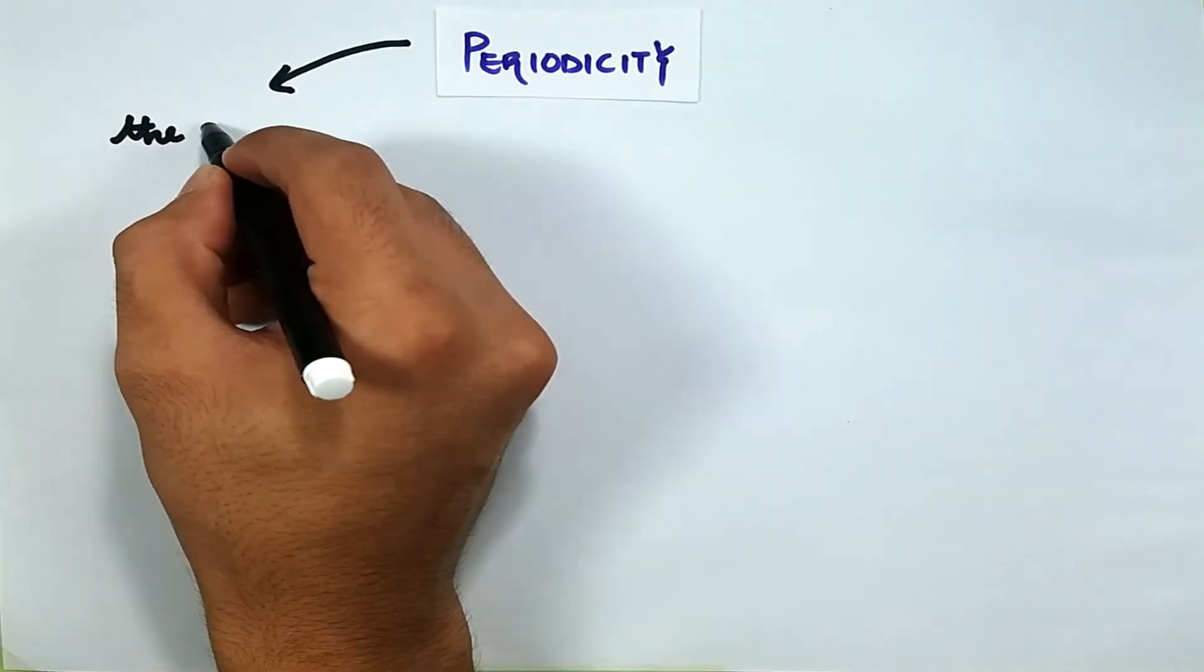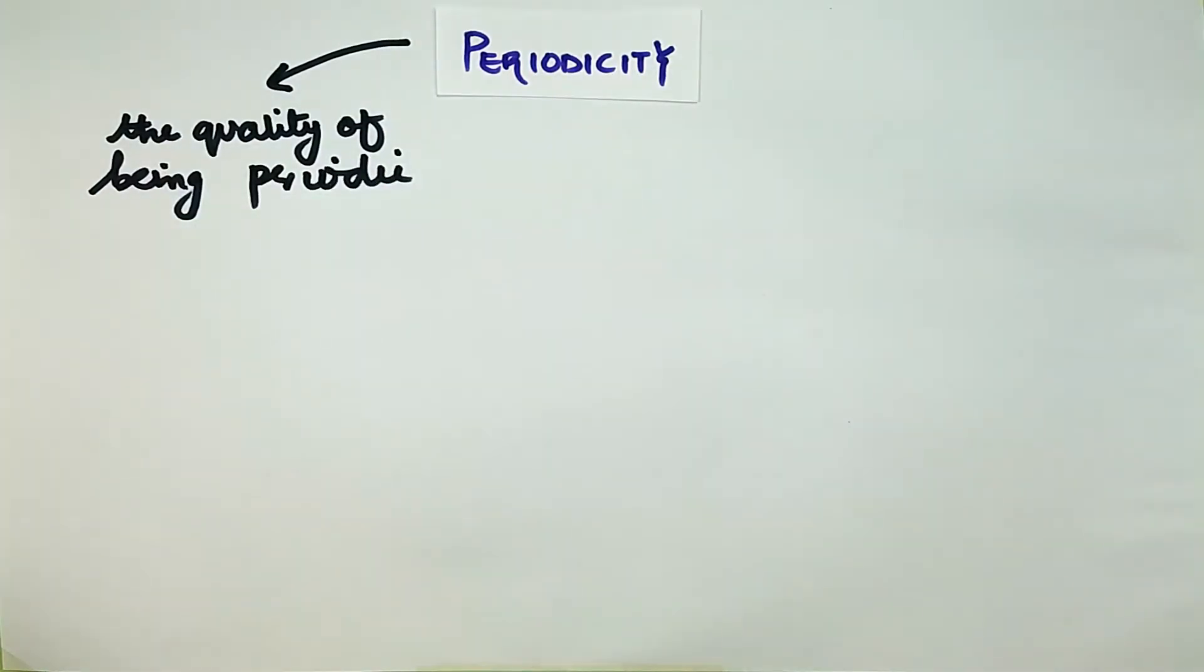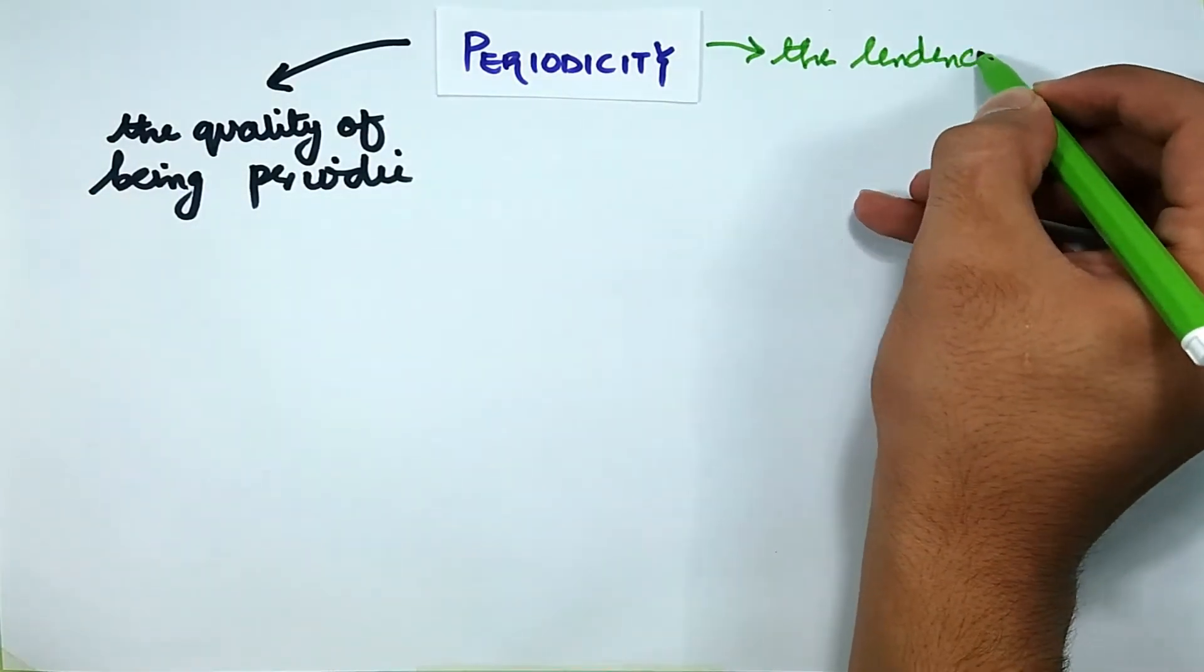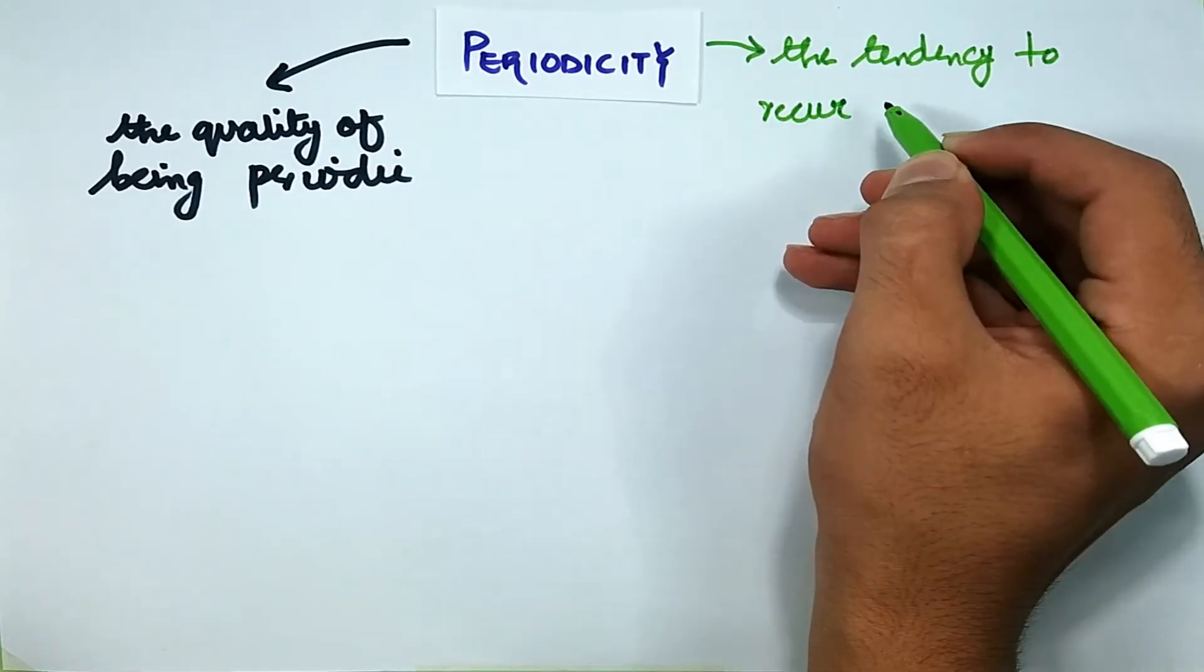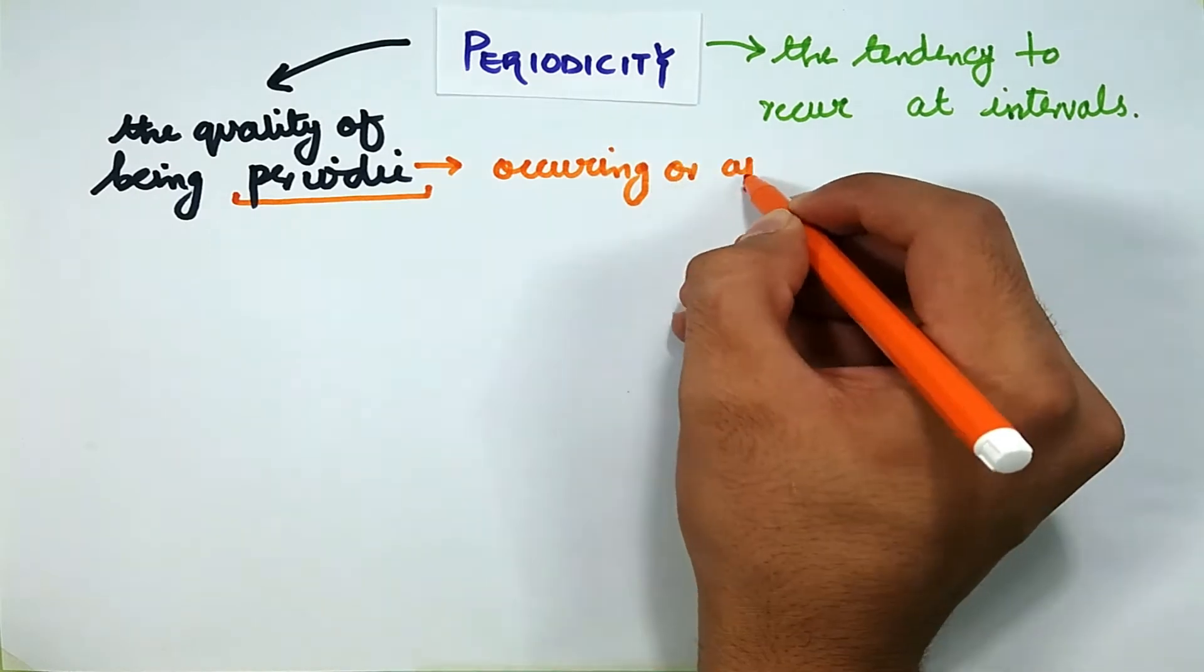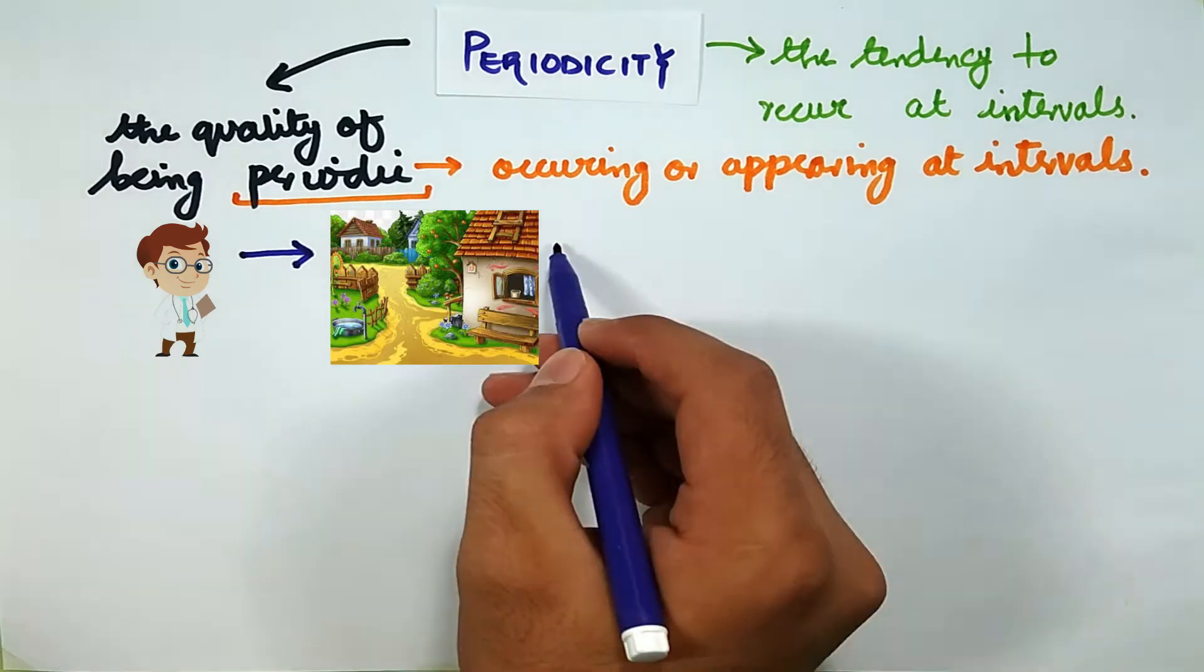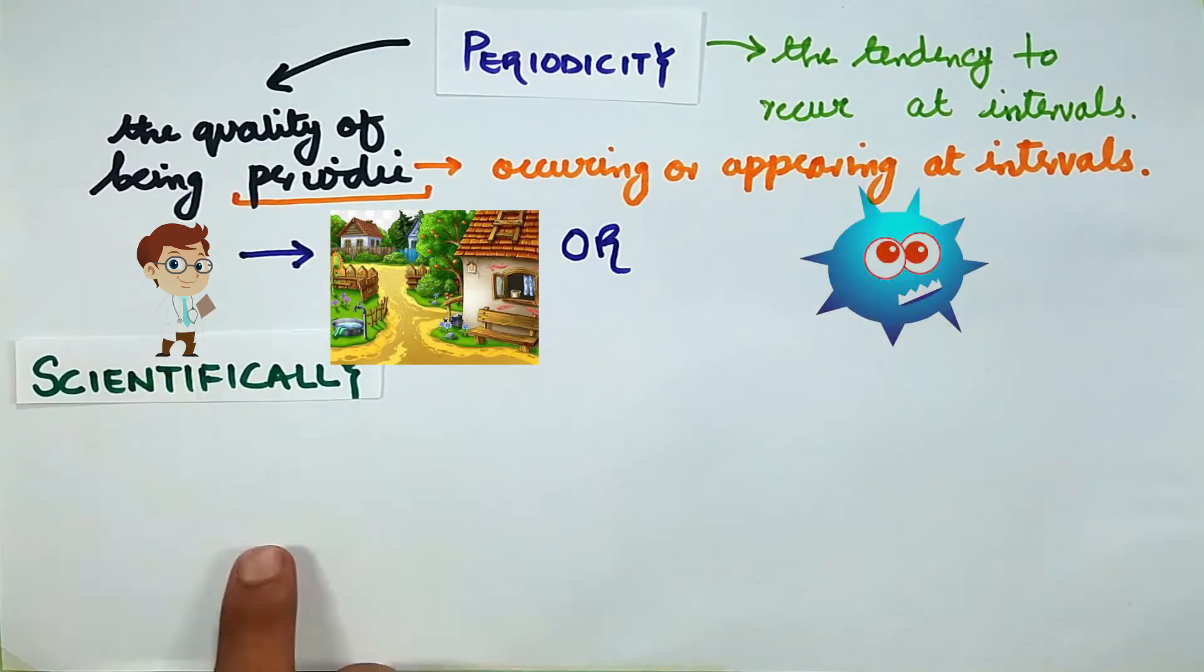Periodicity is defined as the quality of being periodic, the tendency to recur at intervals. Periodic means occurring or appearing at intervals. It may be periodic visits of a doctor to a village or periodic outbreaks of a disease.